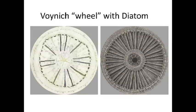Long before I thought there may be microscopes or optical devices in the Voynich, others before me - even long before I was born - were already wondering at the similarity between many objects in the Voynich and microscopic organisms. Diatoms were suggested. I don't know specifically if the Voynich wheel I show here on the left was one of the ones suggested, but it certainly looks a lot like a diatom to me. If you look at the 19th century diatom engraving on the right, the way the spokes look, the thick spokes, the thin spokes, and the rings around the outside with the little lozenge-like shapes on the Voynich wheel match up with the arches of the diatom. I think it's a very close match.